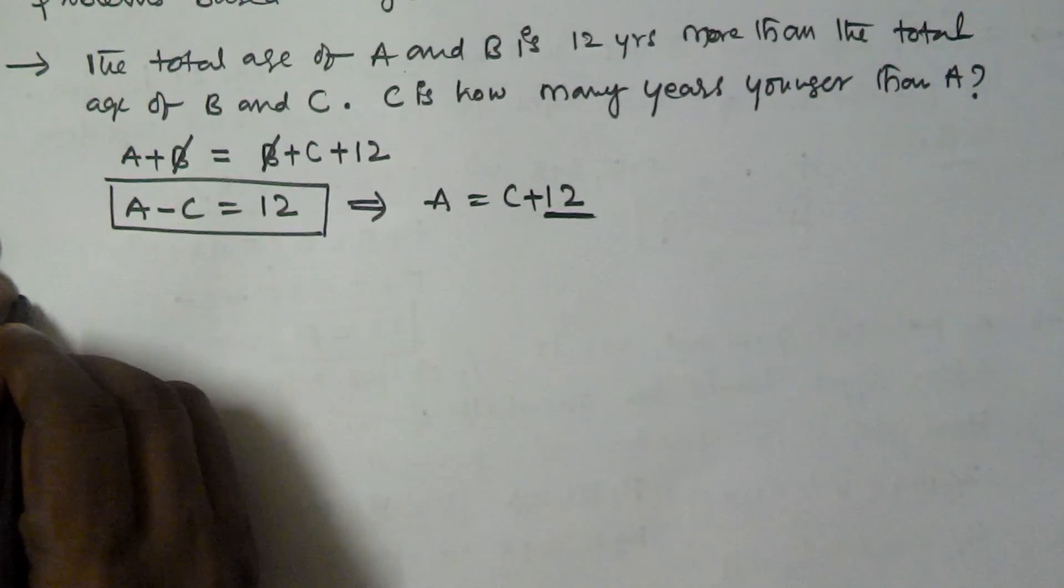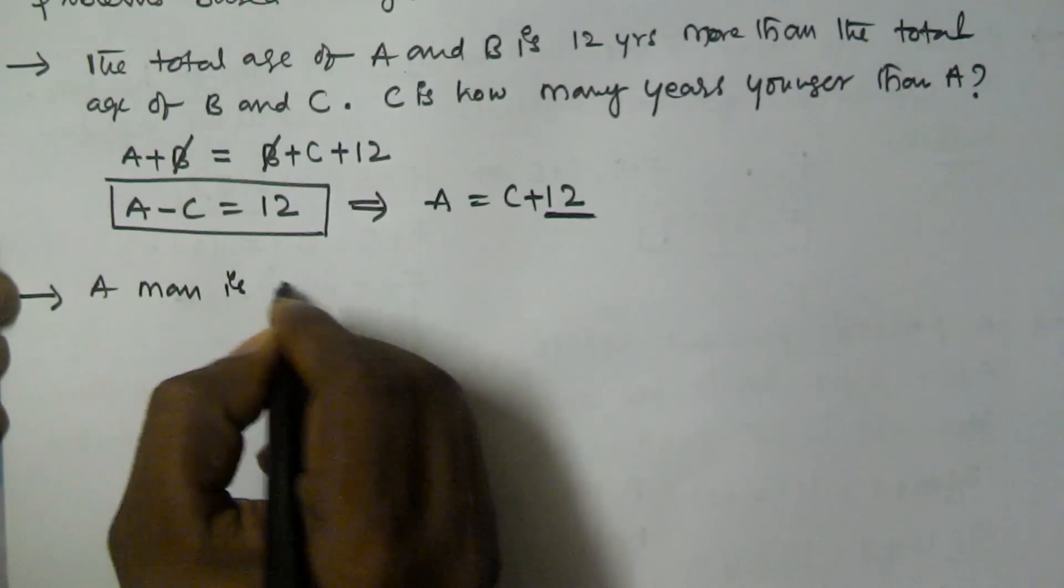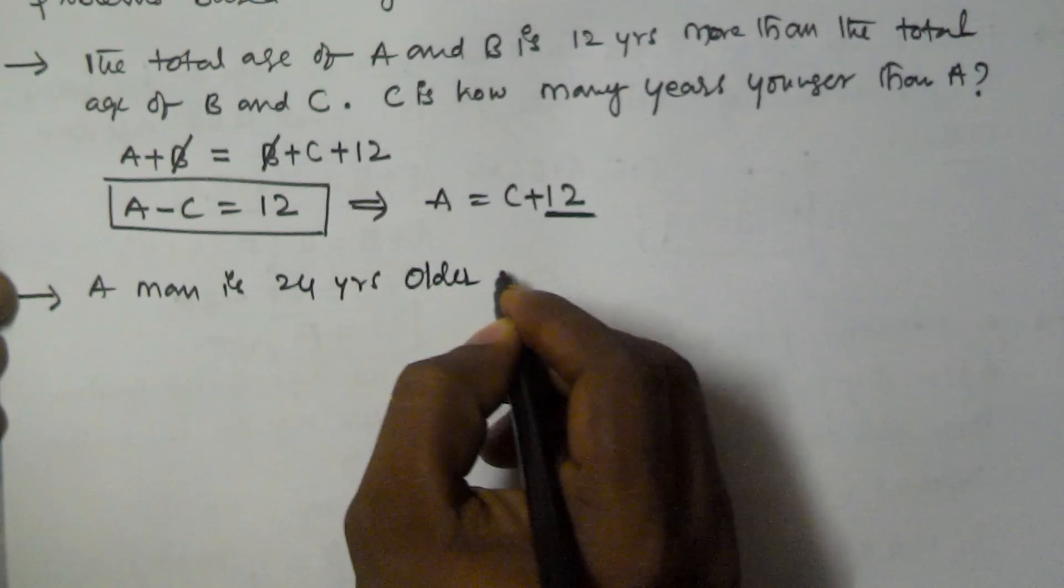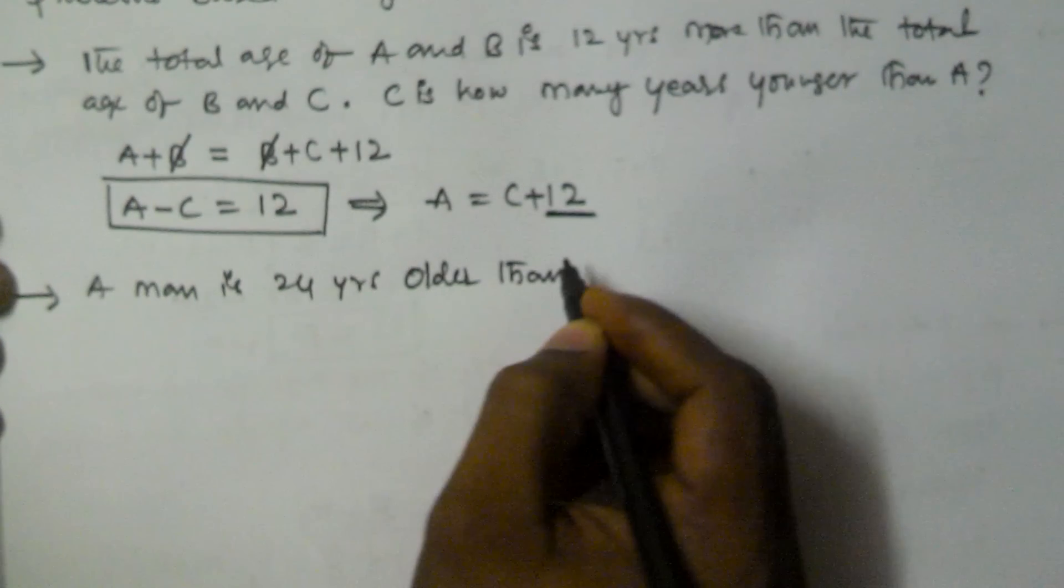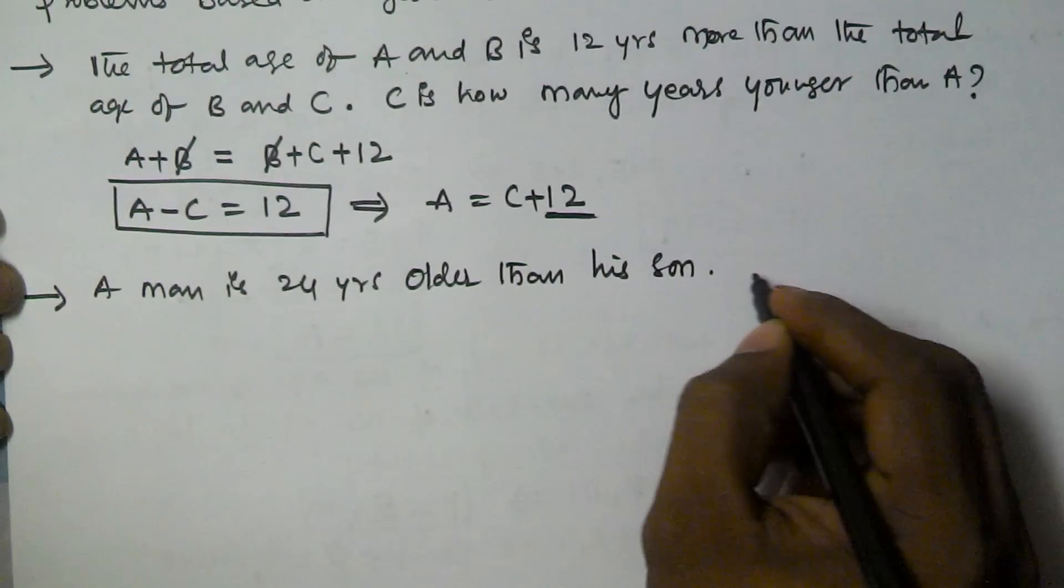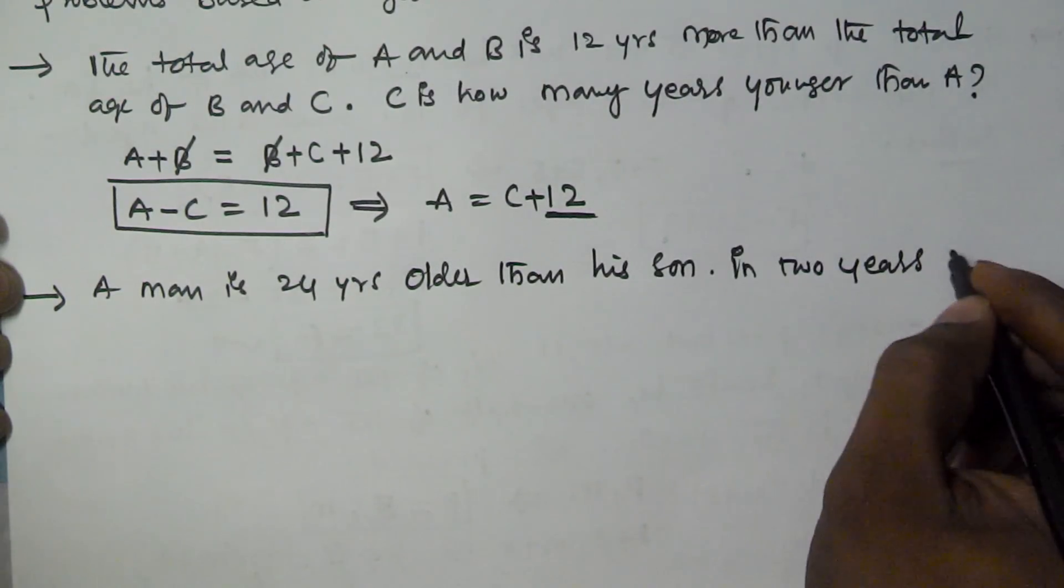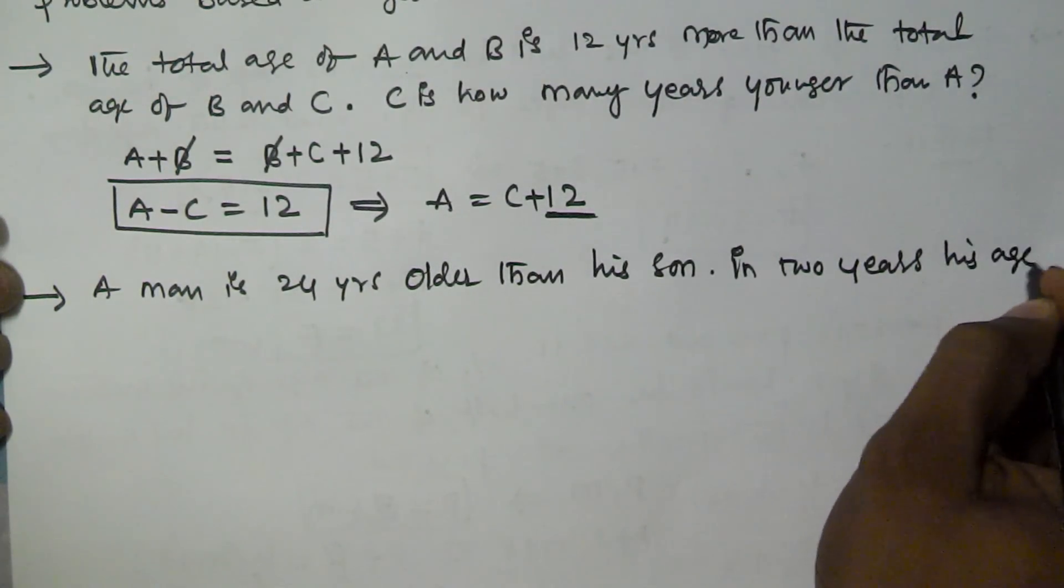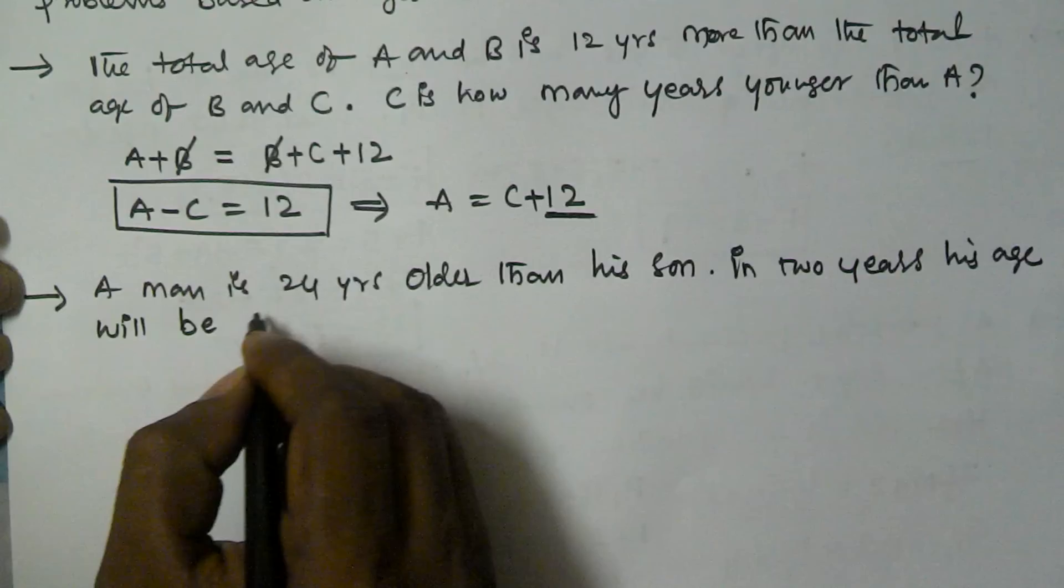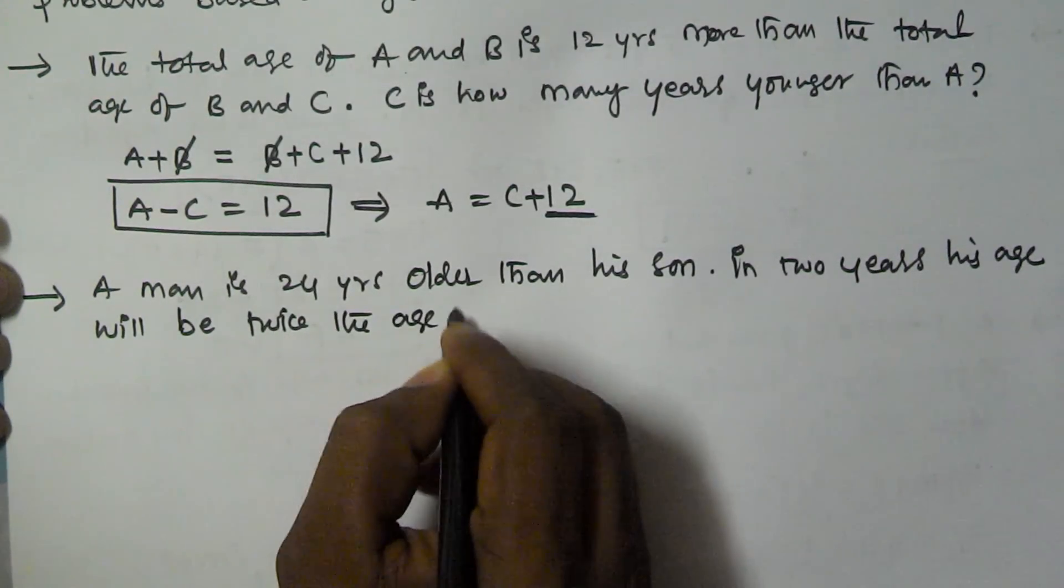Let's see another example problem. A man is 24 years older than his son. In two years, his age will be twice the age of his son.